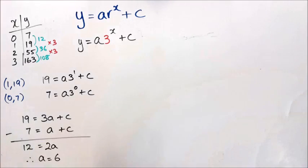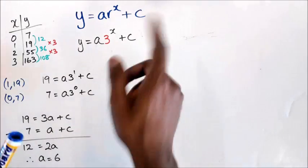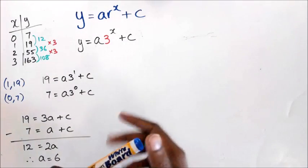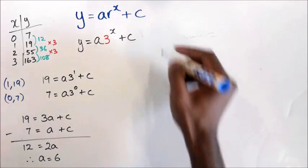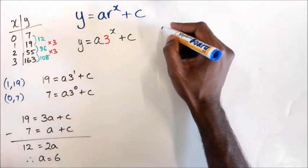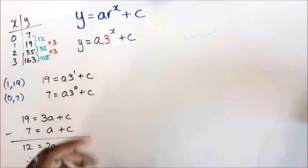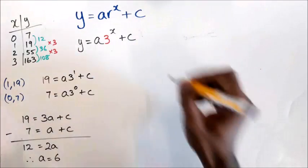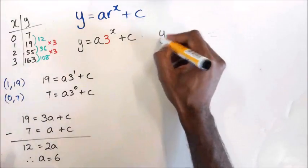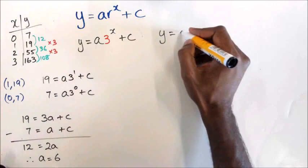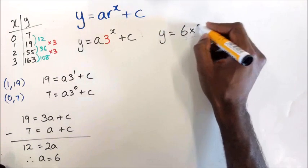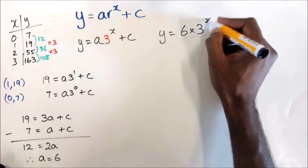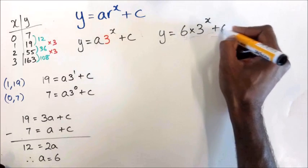My next step is to figure out what the c value — the horizontal asymptote — is going to be. I have y equals 6 times 3 to the power of x plus c.